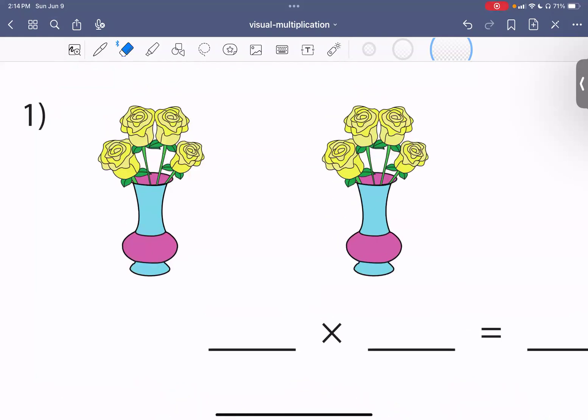We have two vases. Now, each vase has yellow flowers in it. Let's count how many yellow flowers are in each vase. We have one, two, three, four.